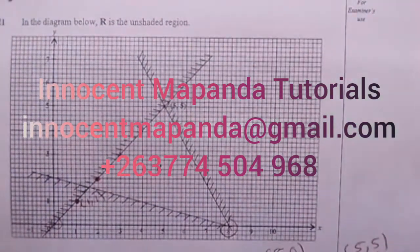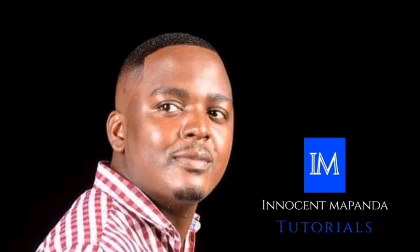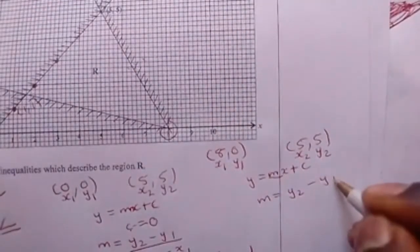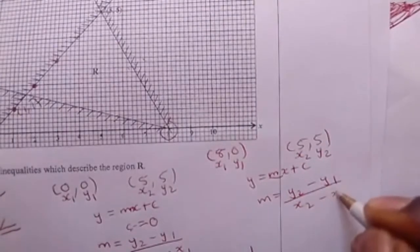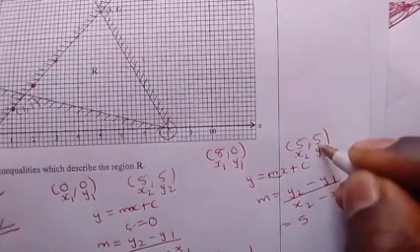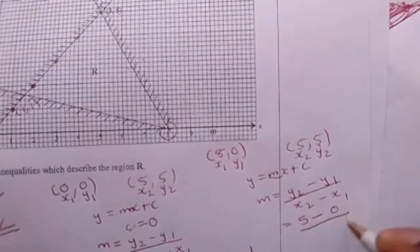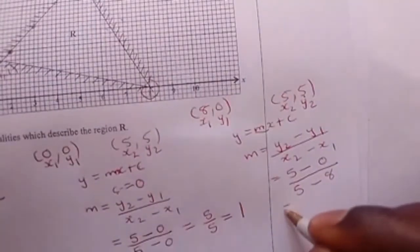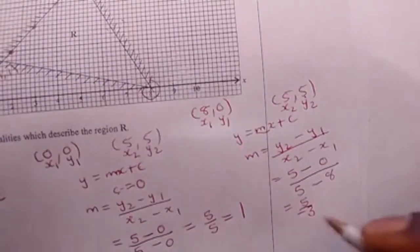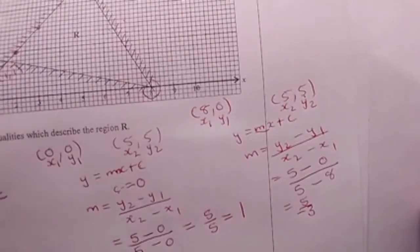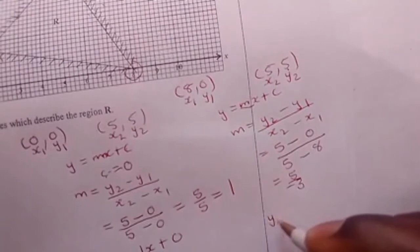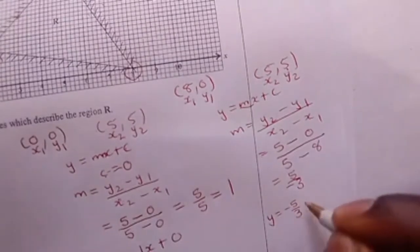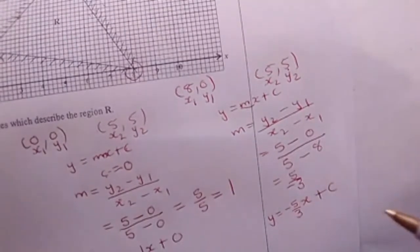We are going to find c using substitution. Starting by identifying m, the gradient: m equals y2 minus y1 over x2 minus x1. On y2 I put 5, y1 is 0, x2 is 5, x1 is 8. 5 minus 0 gives 5, 5 minus 8 gives minus 3. So 5 over minus 3 is m. Substituting: y equals minus 5 over 3x plus c, where c is yet to be calculated.